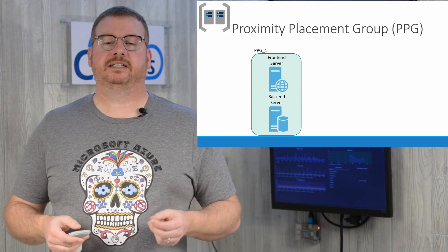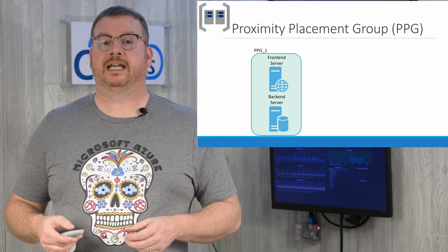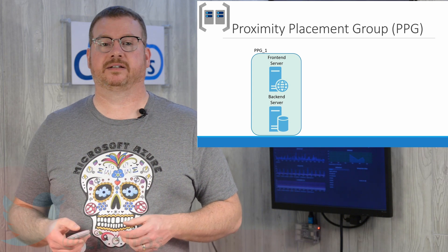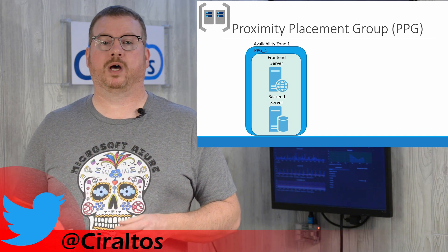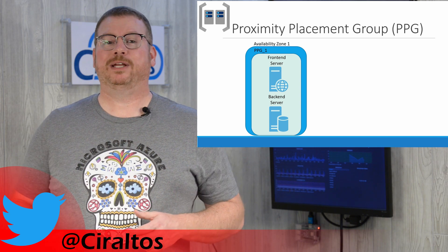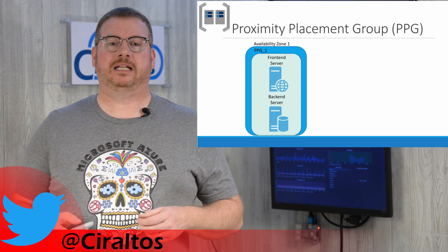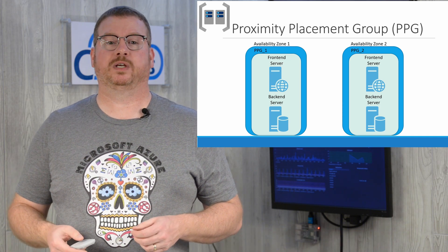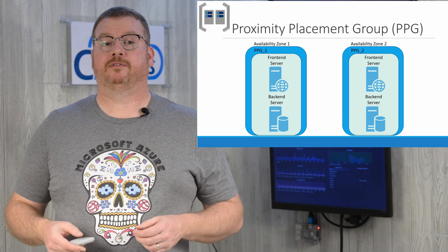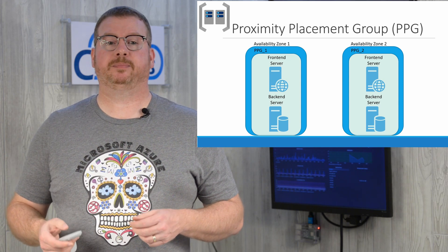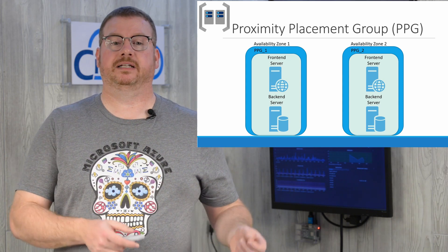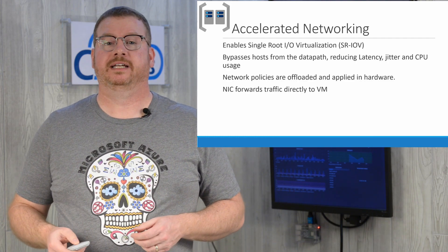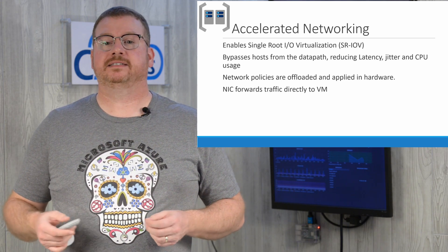Looking at how availability zones and proximity placement groups work together: here we have servers in a proximity placement group improving performance by keeping them close together, with the two servers also in one region in an availability zone. We then duplicate that into a second availability zone and a new proximity placement group. The application is protected against data center failures with availability zones, and performance is optimized by keeping them in proximity placement groups at each availability zone.